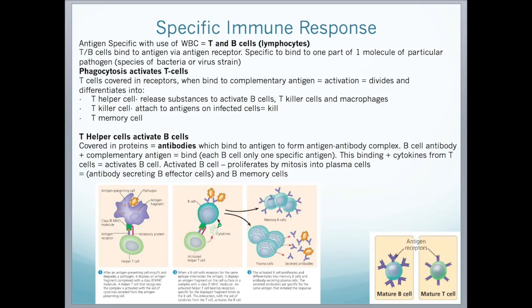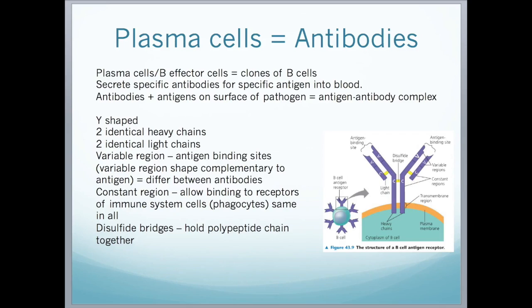B cells are another type of white blood cell. They are covered with proteins called antibodies, and antibodies can bind to antigens to form antigen-antibody complexes. Each B cell has a differently shaped antibody on its surface, so each B cell can only bind to one particular antigen. Together with substances released from T cells, this activates the B cell. The activated B cell then divides by mitosis into plasma cells, also called B effector cells, and B memory cells. Plasma cells secrete specific antibodies for a specific antigen into the blood.